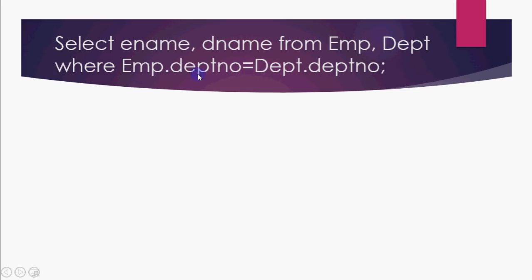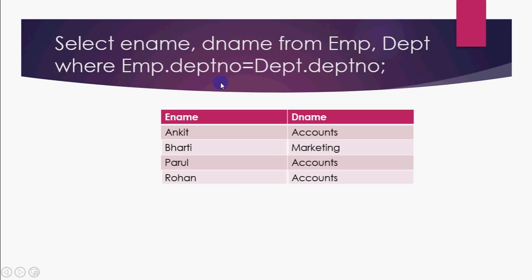Why do you have to write emp.department_number instead of just department_number? Because that column exists in both tables. If you just write department_number, SQL will give you an ambiguity error because it doesn't know which table's column you mean. So we specify emp.department_number equals dept.department_number. If they are equal, the row is shown; otherwise it is not. This join is called an equi join because the condition is equality, and also a natural join because it is based on a foreign key and primary key relationship.